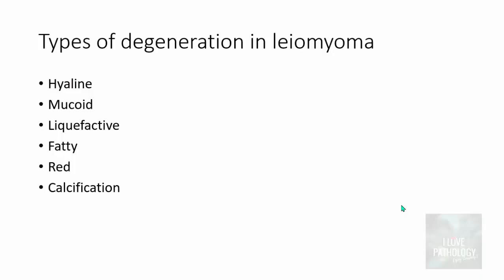The various types of degeneration you can expect in leiomyoma are hyaline degeneration, mucoid degeneration, liquefactive, fatty, red degeneration we already studied. You can find some amount of calcification in certain leiomyomas.